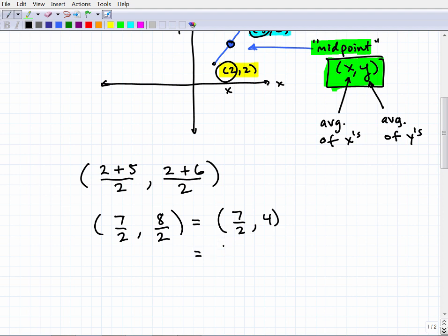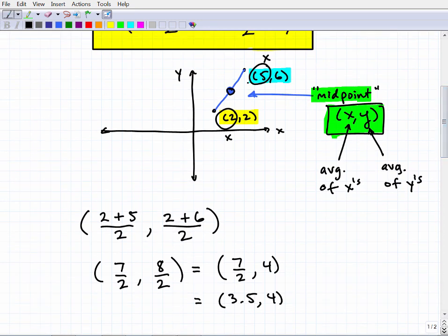So here we have 3.5, comma, 4. So let's see, this was a sketch. But let's see if this kind of makes sense here in our little diagram. So this 3.5, well, this is two, right? One, two. Here's three. And then here, if you kind of notice, it's about 3.5. Okay, so that makes sense.